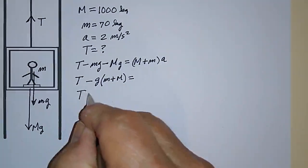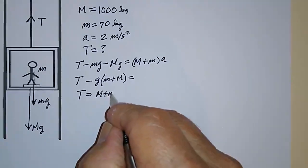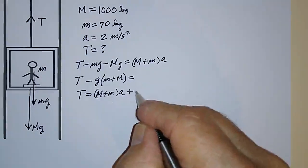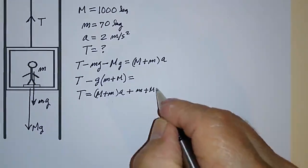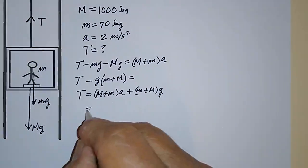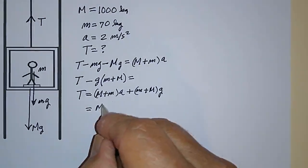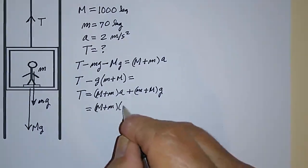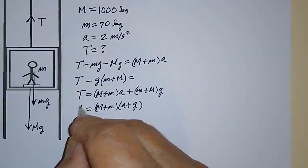...then T is equal to M plus little m times A, plus little m plus big M times G. I can simplify that and write that as M plus little m times A plus G. That's the tension.